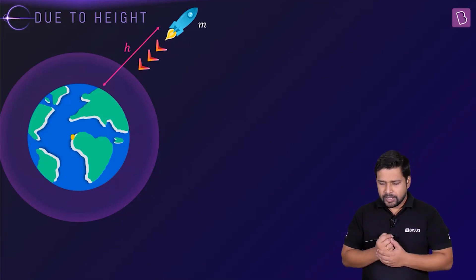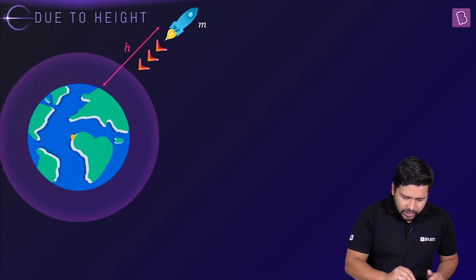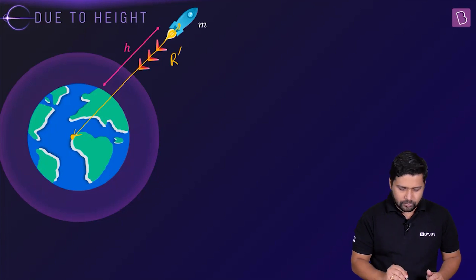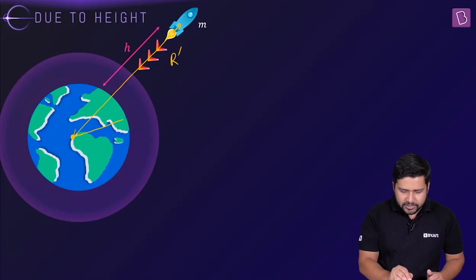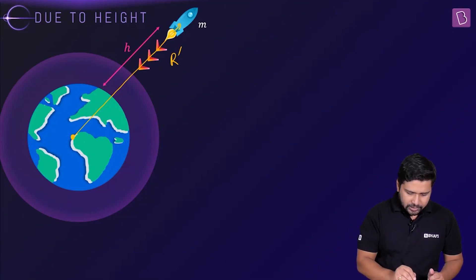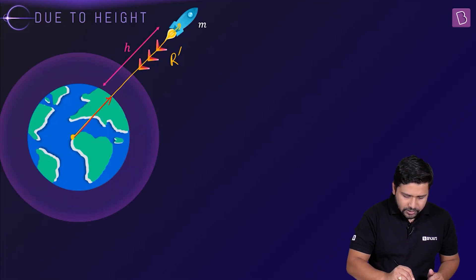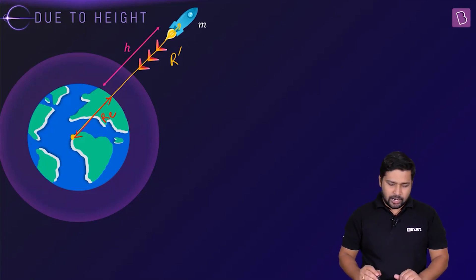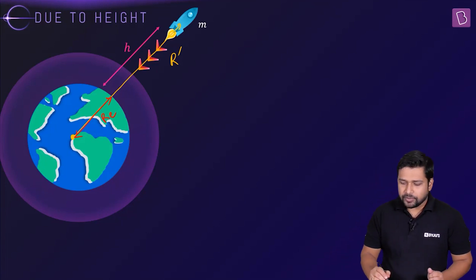Let us say that this is the center of the earth. The body is at some distance — let us call it r_dash — which is of course the radius from the center. We know this is the radius of the earth, r_e. The total distance from the center to the body is r_dash, and the body is at a height of h. So r_dash equals r_e plus h.